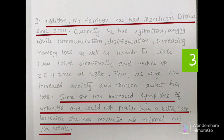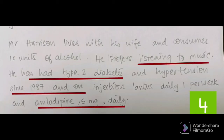Then write the patient's wife's concern: 'Thus his wife has increased anxiety and concern about his care, since she has increased symptoms of arthritis and could not provide him better care, for which she has requested his referral into your service.' This is a request from his wife, not from our side. That is why we write it this way. So it is clear: patient has delayed wound healing and Alzheimer's disease, plus patient's wife has arthritis problems - it is very difficult for her to take care of her husband, so she is requesting the referral.